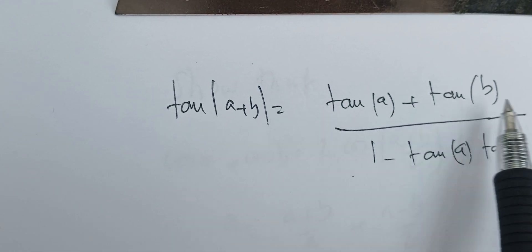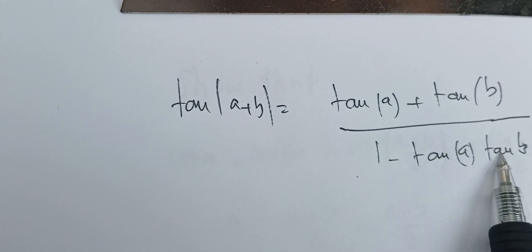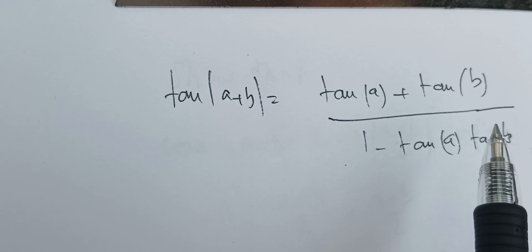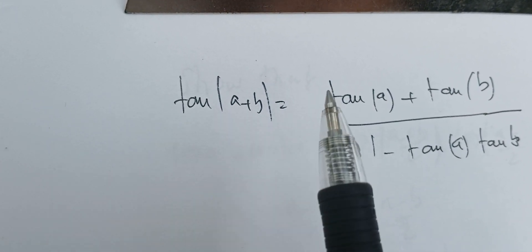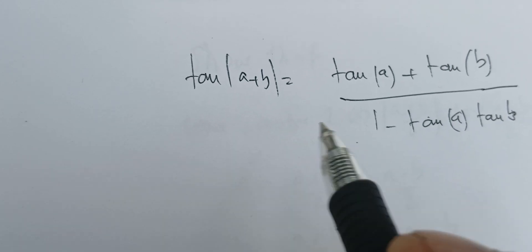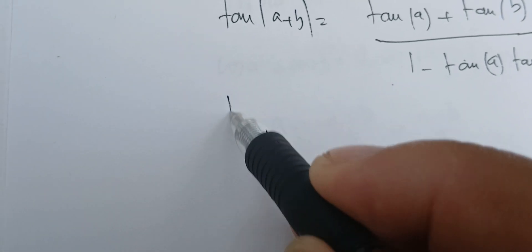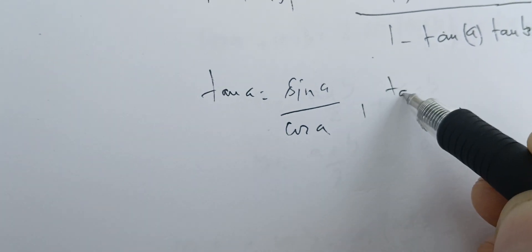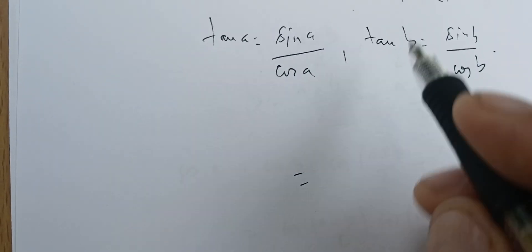You can just apply the definition of the tangent — that's the easiest way. We're going to do the easiest way. We note that the tangent of a is sine a over cosine a, and tangent of b is sine of b over cosine of b.